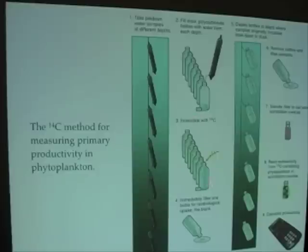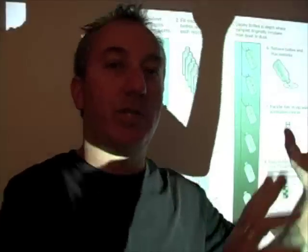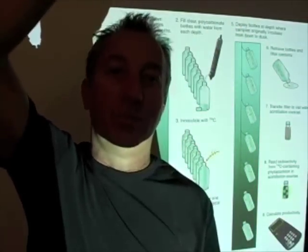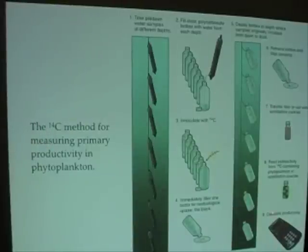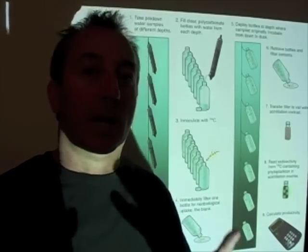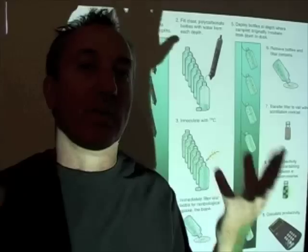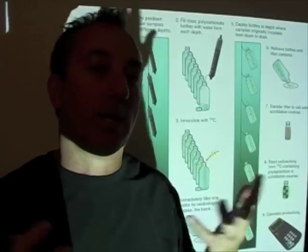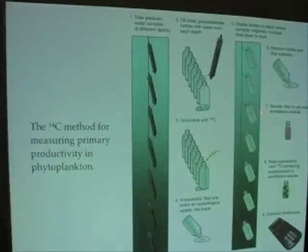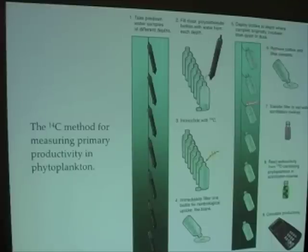After inoculating the bottles with C-14 and taking the blank, we put the bottles out on a string at different depths right at dawn. We load all these bottles onto a float and throw it off the ship, and the ship has to hang around all day near this buoy array of bottles incubating at different depths. The phytoplankton in the bottles are photosynthesizing and absorbing carbon-14, with the highest rates of uptake in surface waters and the lowest in deeper, darker waters.